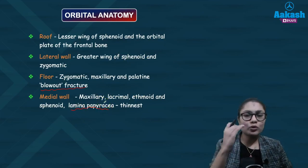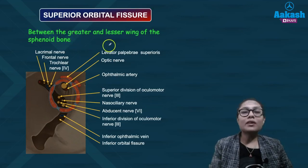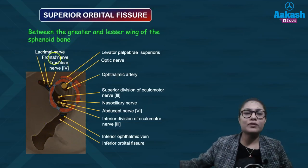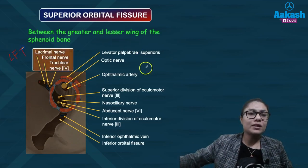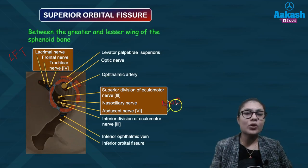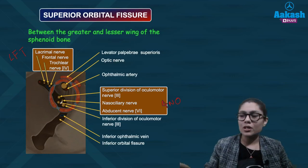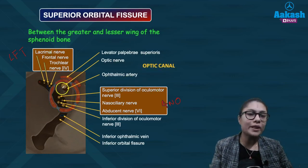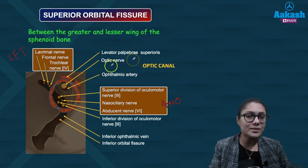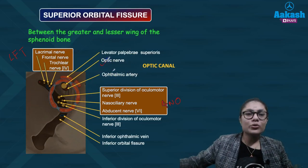When the floor gives way after trauma, this is known as a blowout fracture. The strongest wall is the lateral wall, while the thinnest is the medial wall, lamina papyracea. Between the greater and lesser wing of the sphenoid is a fissure known as the superior orbital fissure. Structures passing through it can be remembered with the mnemonic LFT ANO: lacrimal nerve, frontal nerve, trochlear nerve, abducens nerve, nasociliary nerve, and oculomotor nerve. The optic canal, encircled by the annulus of Zinn, transmits the optic nerve and ophthalmic artery.